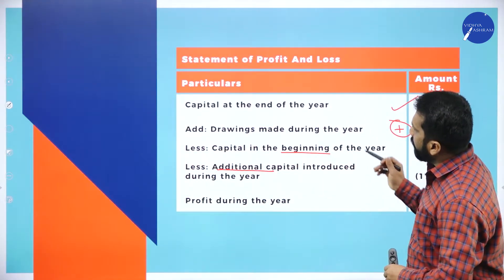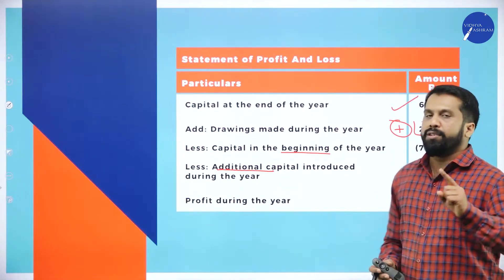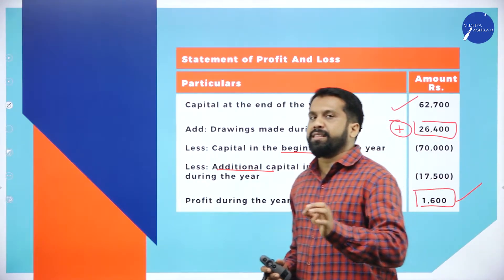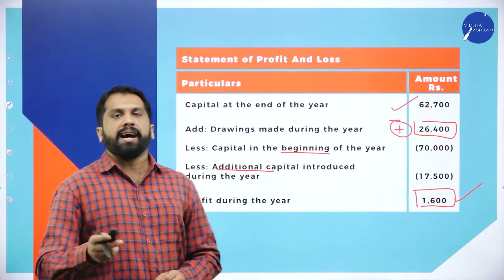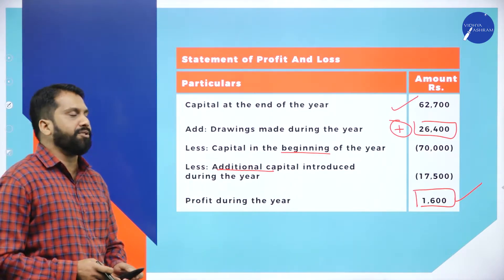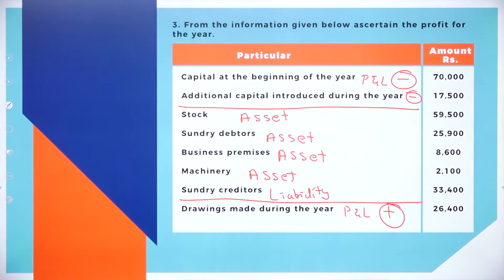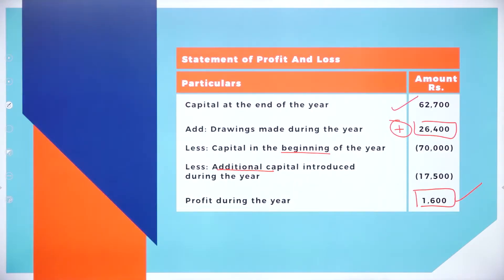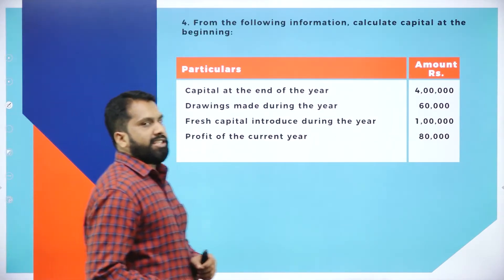Your statement of profit and loss account is done and your statement of affairs is also done. Your final answer is 1,600. Go back to the first slide to take a screenshot of the question, noting which items come under assets and liabilities, as well as your P&L. Take a screenshot of the statement of affairs and the statement of profit and loss account. Now we'll move to the next problem.